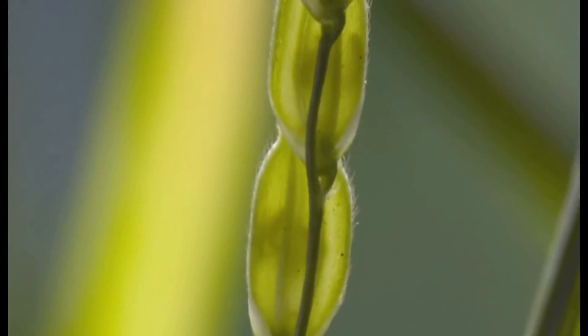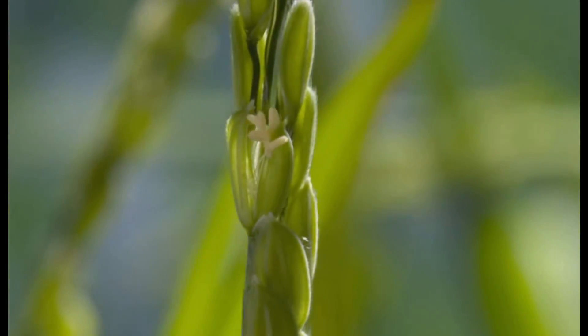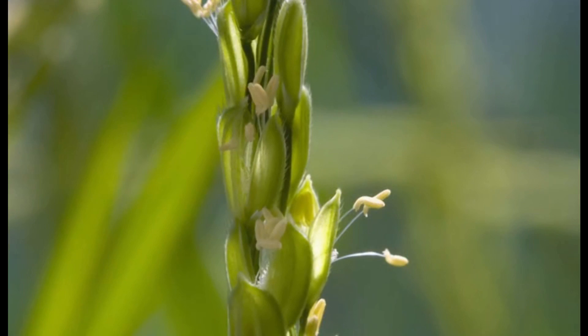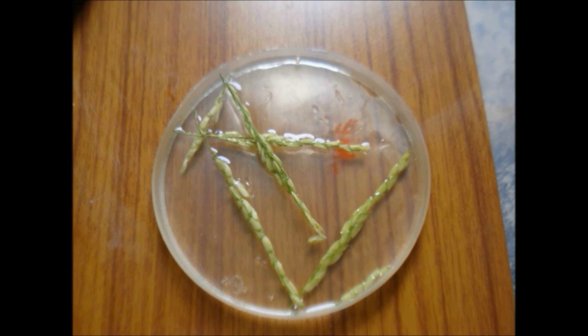The rice flowers are selected before the anthesis stage. We use a dissection microscope to dissect the rice flower. The rice tillers are kept in a petri dish with water.